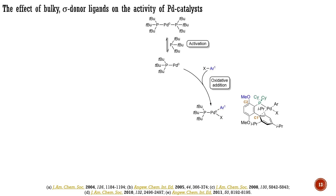The effect of bulky sigma-donor ligands on the activity of palladium catalysts is demonstrated using the example of palladium complexes based on tri-tert-butylphosphine. However, all the activating effects described for tri-tert-butylphosphine are inherent for other bulky donor phosphines. For instance, coordinatively unsaturated and monoligated palladium species were described for many phosphines developed by Buchwald.